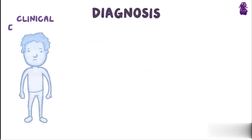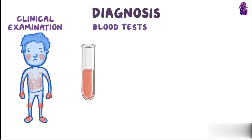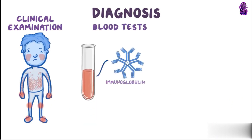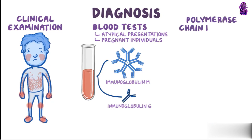Parvovirus B19 infection is usually diagnosed by clinical examination. Blood tests looking for antibodies to the virus — specifically immunoglobulin M and immunoglobulin G — are reserved for atypical presentations of the virus and for pregnant individuals.